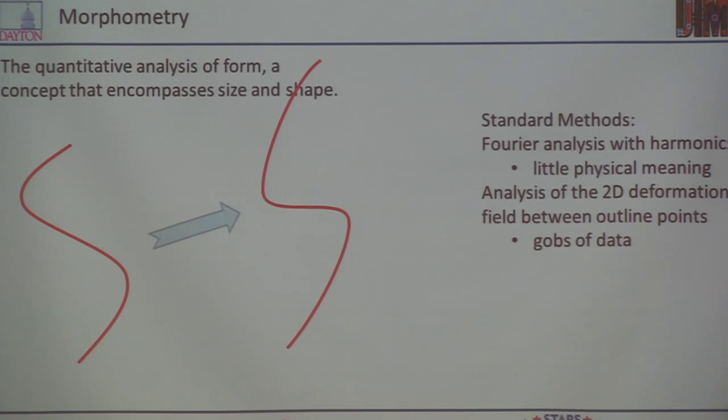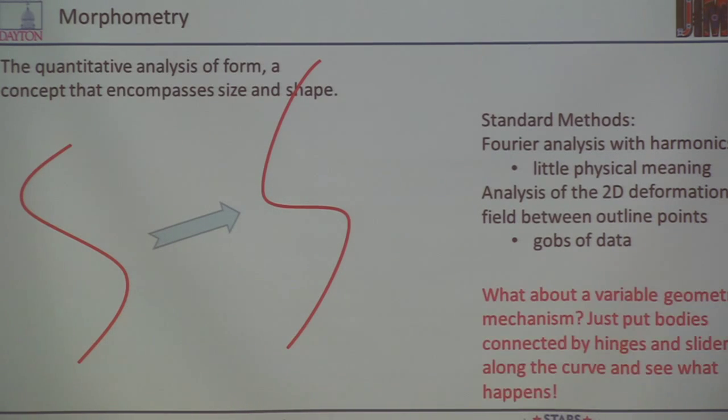Another place we seem to be able to apply these ideas, and we're just getting into this is in the area of morphometry. Morphometry being right there, the quantitative analysis of form, a concept that comes to size and shape. In other words, I want to be able to quantitatively compare this to this. And there are methods for doing it. And like all methods, they have their strengths and they have their weaknesses. But in talking to the morphometry people, the idea came up, well, what about a variable geometry mechanism? Why don't we just try and put, why don't we just try and solve this the same way you're solving your design problems by putting rigid links along here and connecting them with hinges, things that rotate and things that change length that just telescope or slide across each other.